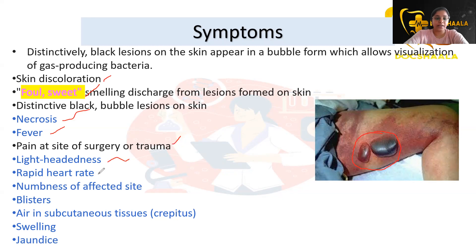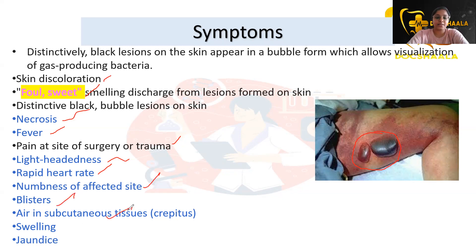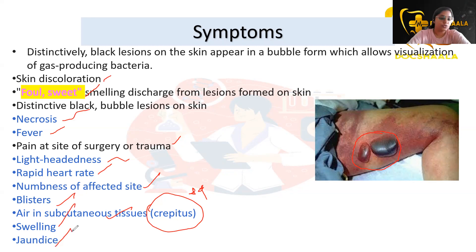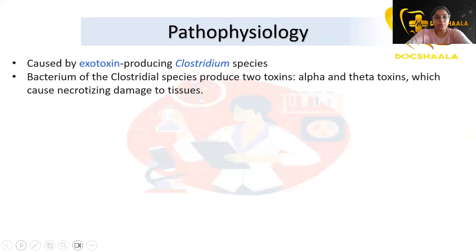Fever is present, pain at the site of surgery or trauma, lightheadedness, rapid heart rate, and numbness of the affected side. Blisters are seen and air in subcutaneous tissue, also known as crepitus — a crackling sound that can be heard when we palpate the lesion. Swelling and jaundice are also seen in patients with gas gangrene.